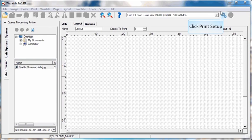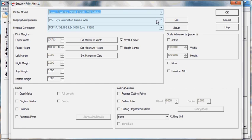To begin, click the Print Setup window. Select your printer model, image configuration, and physical connection.